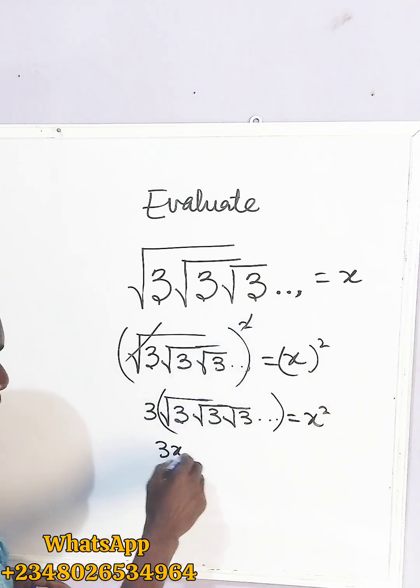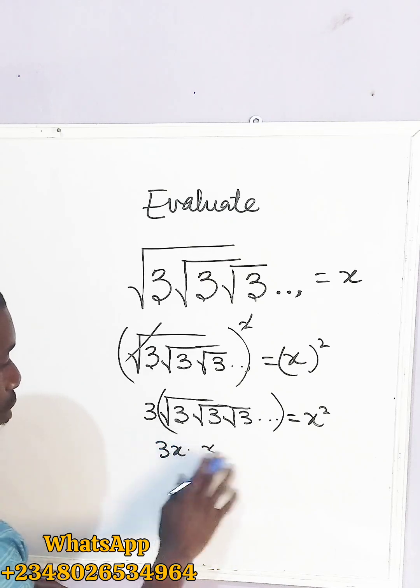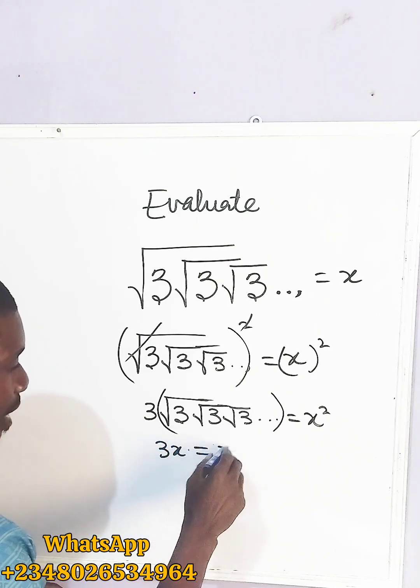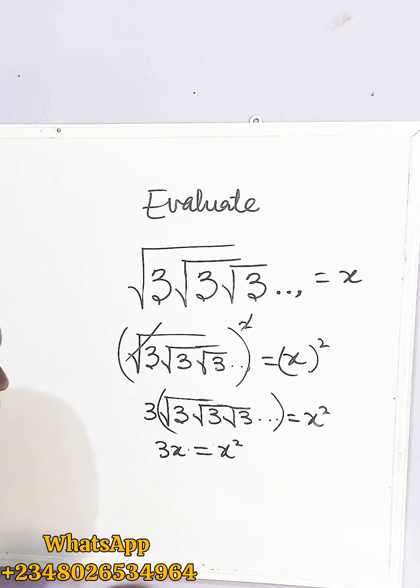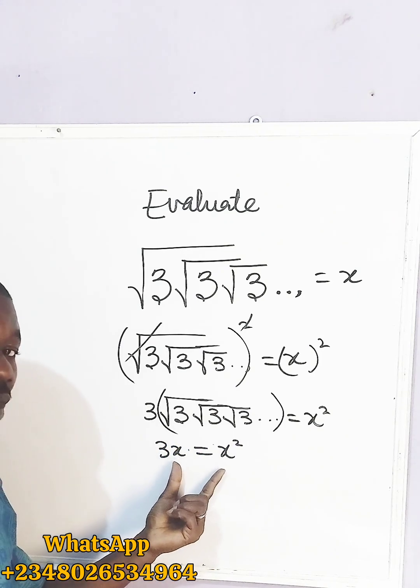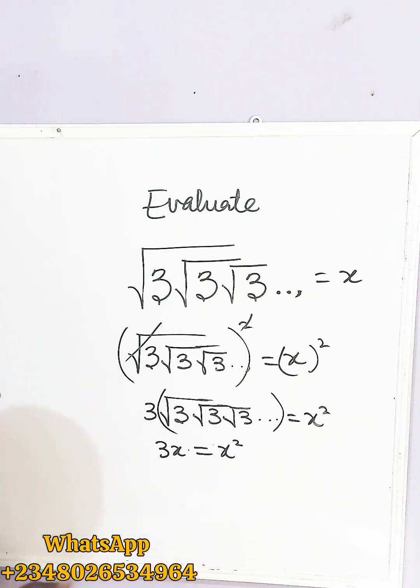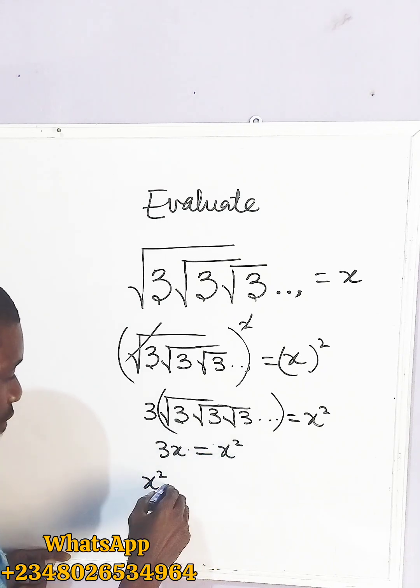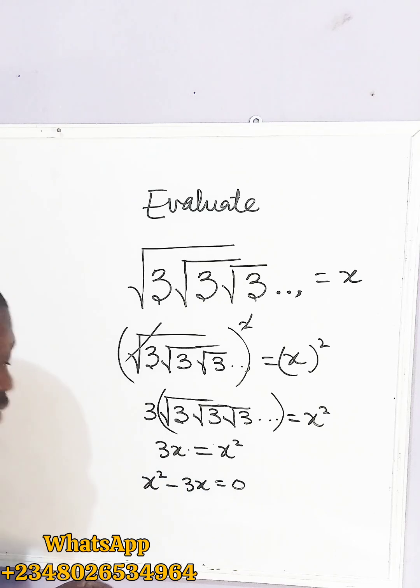So here we have 3x, equals x squared. Okay? Now, let us equate them to be equals to zero. So here we have x squared. Now bringing this over to here, you have minus 3x equals what? Zero.